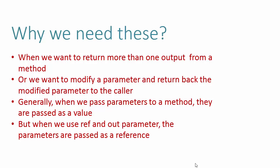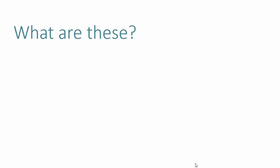Generally when we pass parameters to a method they are passed by value, meaning only the value is propagated inside the method — the parameter does not point to the same memory location as the original variable. But when we use ref and out, parameters are passed as a reference. They refer to the exact memory location of the original variable, so changes made inside the method affect the actual variable. This doesn't happen with normal parameters.